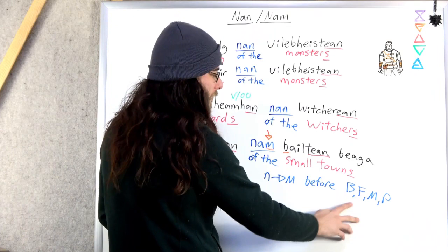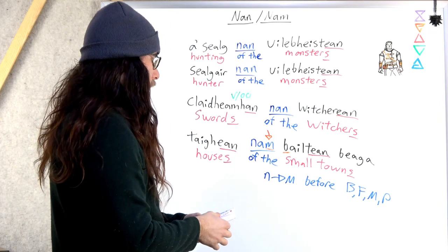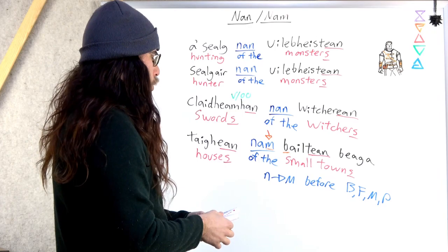Gaelic wants to flow, and it wants to flow because it's kind of easiest. It's less work for your mouth, for your tongue. That's why we get a lot of these sound changes. To help it flow, but also when it flows, it's less work for us to say. So we have nam before any plural that starts with b, f, m, or p.